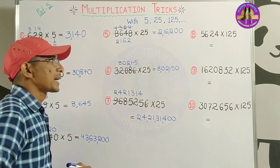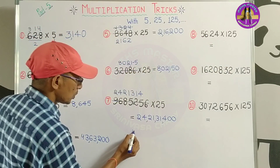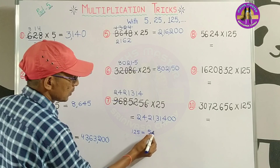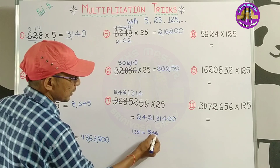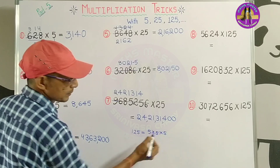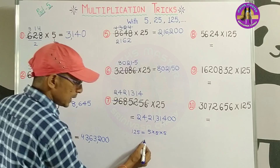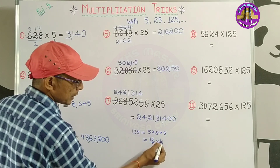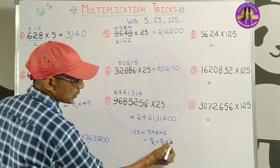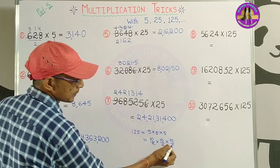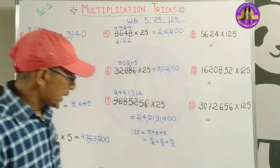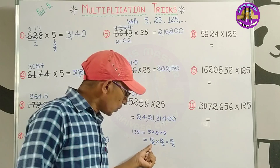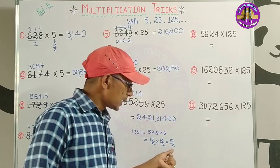We will do 125 multiplication. 125 = 5 × 5 × 5. We will do 10 by 2 × 10 by 2 × 10 by 2 = 1000 by 8. So for 125 multiplication, multiply by 1000 and divide by 8.